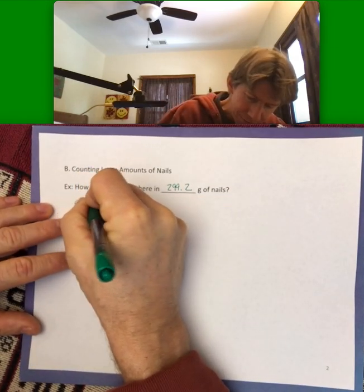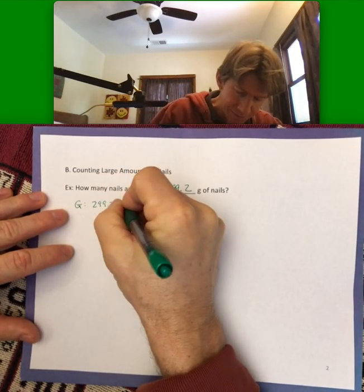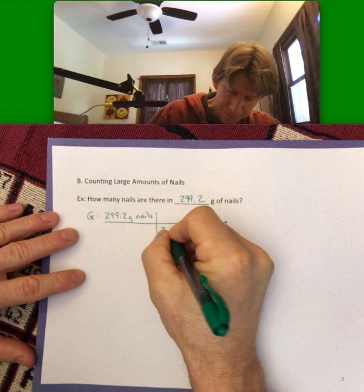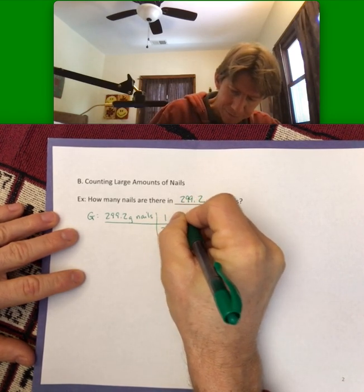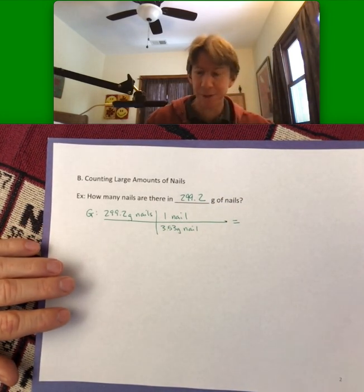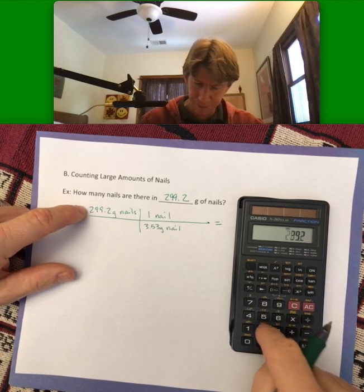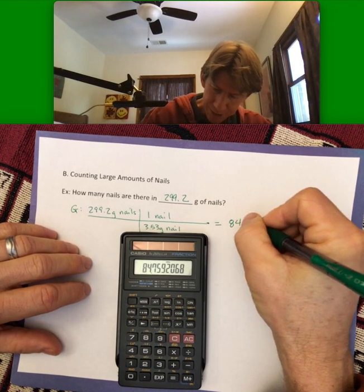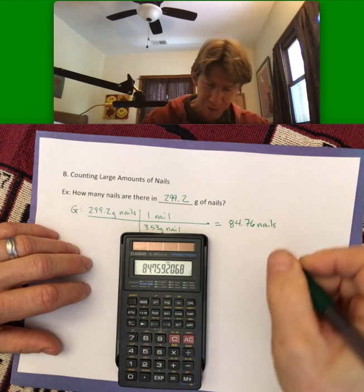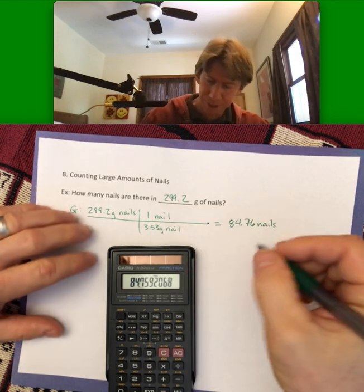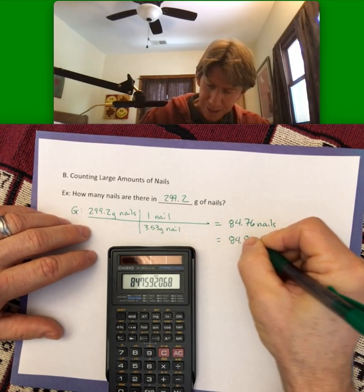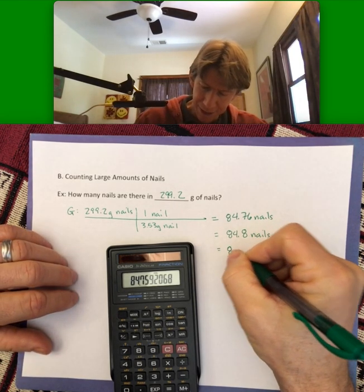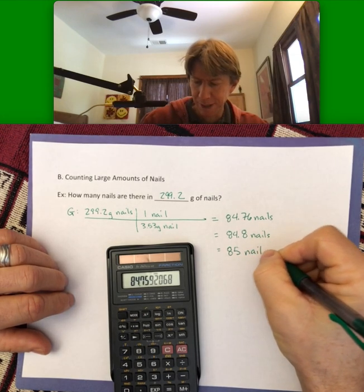We're given 299.2 grams of nails. Our conversion factor is 3.53 grams of nails per one nail. Let's see how many nails we have in the total. So 299.2 divided by 3.53 gives us 84.76 nails. That's too many sig figs — I should go back to three, because I only have three significant figures here. So 84.8 nails. Now the analogy is not perfect because we can only really have a whole number of nails, so I am going to round it to 85 nails.